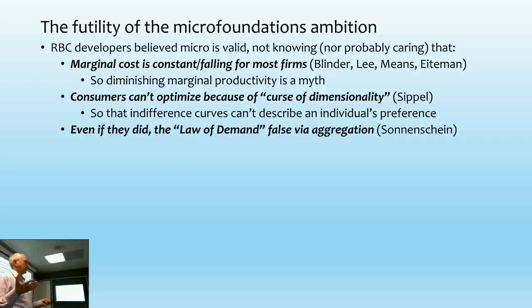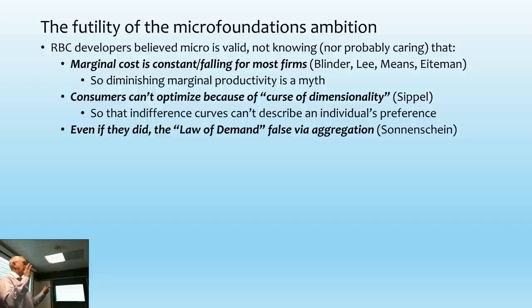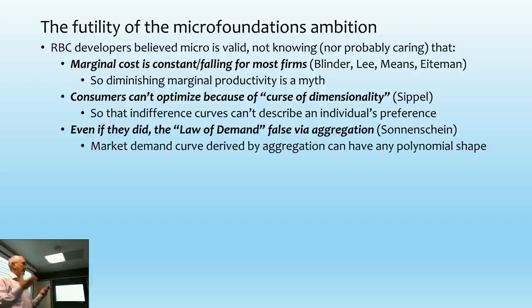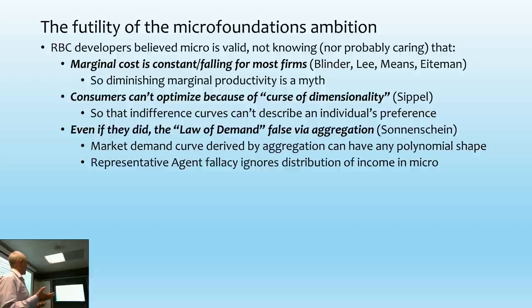From the Sonnenschein-Mantel-Debreu theorem, we find that if you start with consumers whose indifferent preferences you can describe using indifference curves obeying the axioms of revealed preference, when you aggregate — because you haven't got any concept of income distribution in that model of consumer behavior — you get substitution and income effects that can't be cancelled out. So if you do it with consumers with different tastes and commodities that are luxuries and necessities, you can get any polynomial shape whatsoever for a demand curve. The whole idea of a downward-sloping demand curve disappears as well.